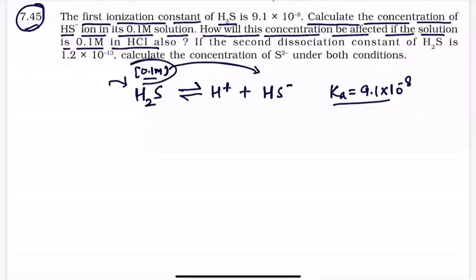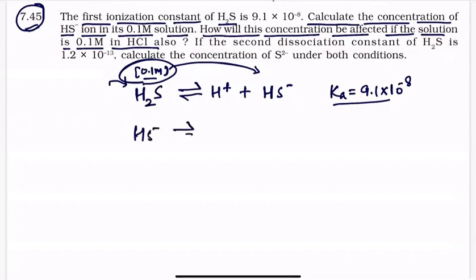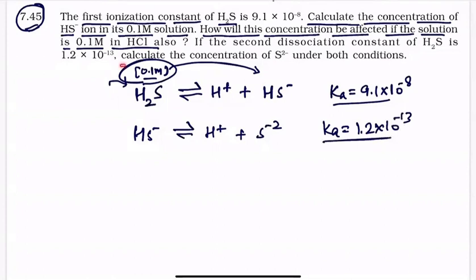So students, what did I say in the second part? I was saying that if you have a solution, then you know that the equilibrium will be backwards. So now I'm asking how much HS⁻ ion concentration will be. If the second dissociation constant of H₂S — what is the second dissociation constant of H₂S? This is the first dissociation constant of HS⁻ ion.